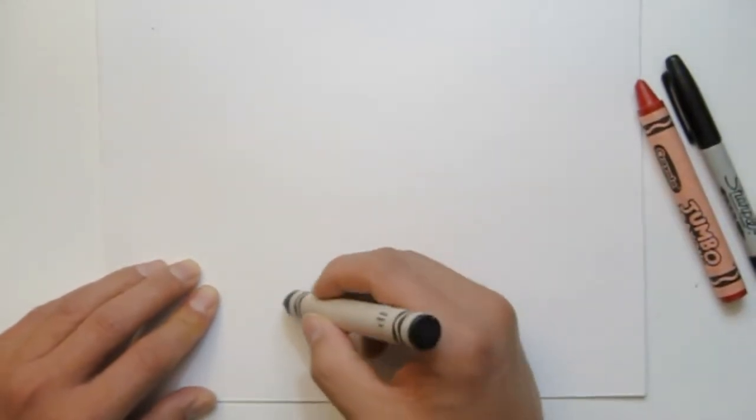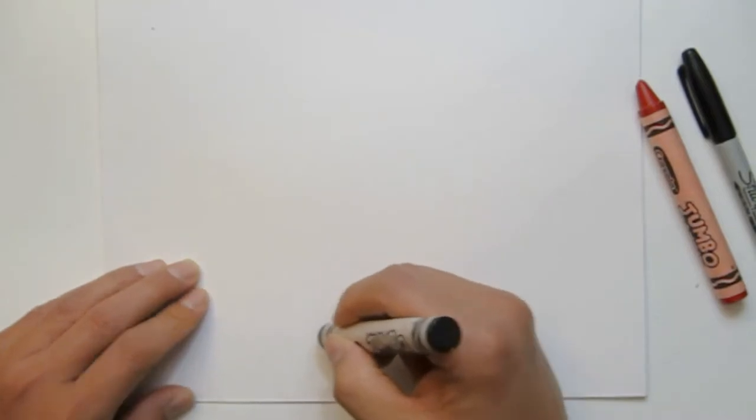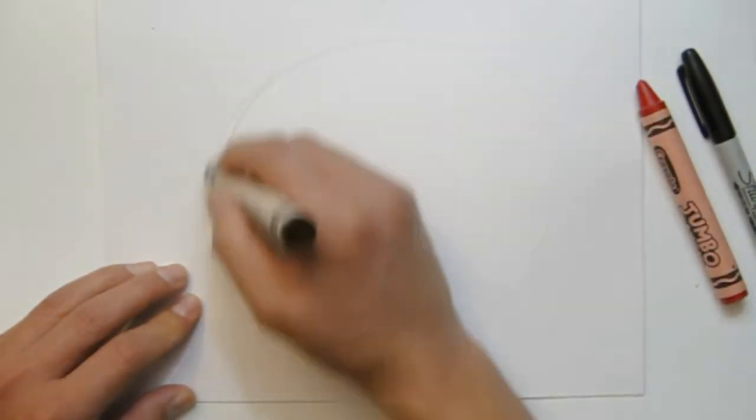Let's draw a Ghostbusters logo. It's fun to do and simple. All you need is paper, a black crayon, a red crayon, and a sharpie.